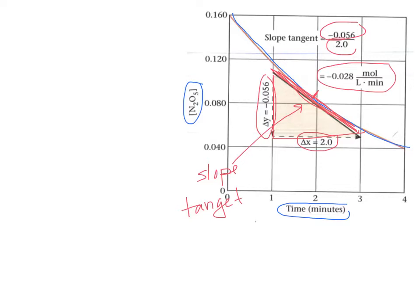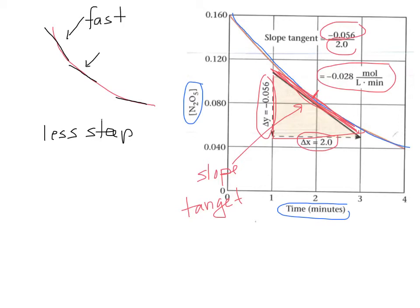What I want you to notice is that the graph is a curve. At different points along the curve, what's happening to the tangents? They're getting less steep. When the slope is steeper, the reaction rate is fast; a little less steep means medium; and here it's slow. As a reaction takes place, the rate of reaction gets slower and slower. It starts off as fast as it's going to be and then slows down over time.